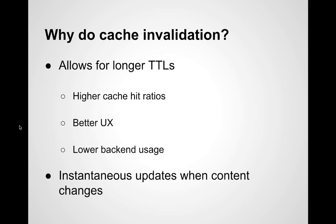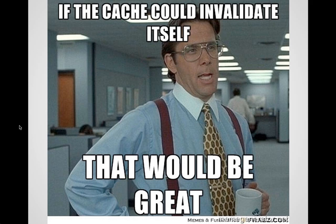The other reason to do cache invalidation is to get instantaneous updates on content changes — especially true for online media. When breaking a story, it used to be about hours; it's now about seconds and minutes. Having that story reach your front page instantaneously the moment it's published means you need to make sure all the caches on the way get invalidated. If the cache could invalidate itself that would be great, but it won't, so we need some sort of integration between Varnish and the back-end that controls the content.